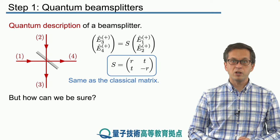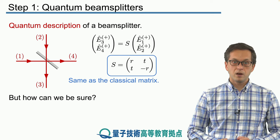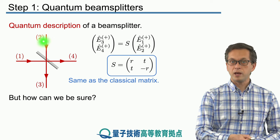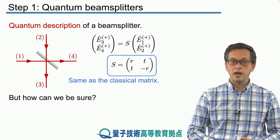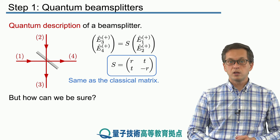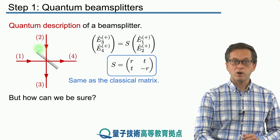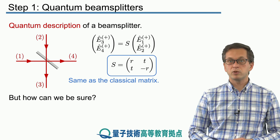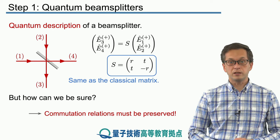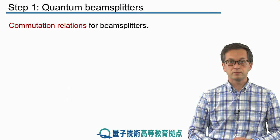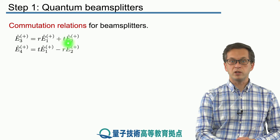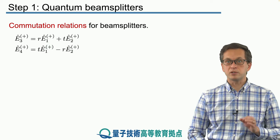How can we be sure that this is the correct transformation? We know the commutation relations for input mode 1 and input mode 2: A1 and A1-dagger must commute to give 1, and same for mode 2. So in order for this transformation to be physical and correct, we require that the commutation relations at the output are preserved — in other words, the commutator of A3 with A3-dagger is 1, and same for mode 4. Let's check that this is true for our matrix S, by writing out the output modes in terms of input modes, considering single-mode light.